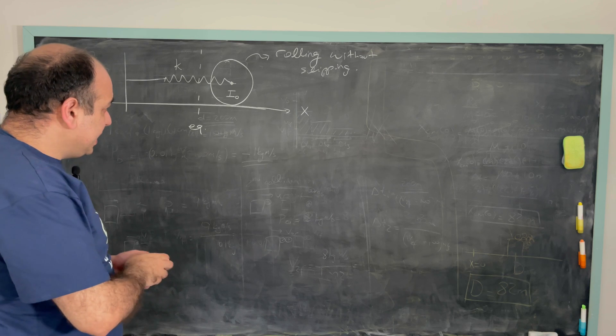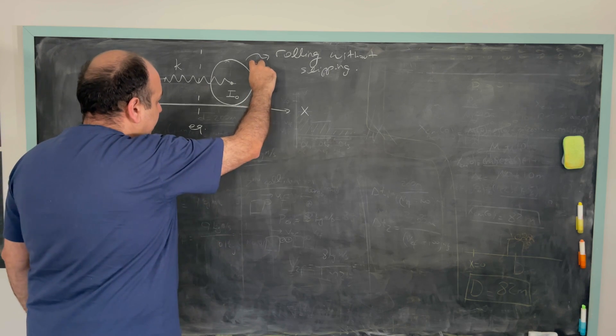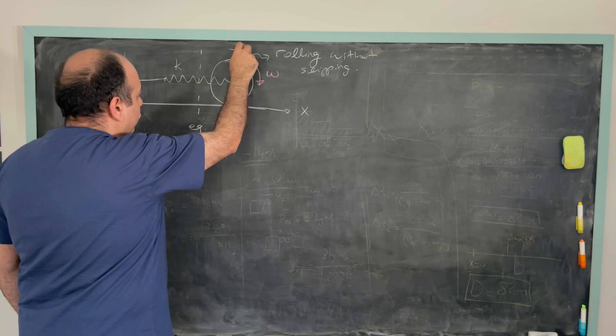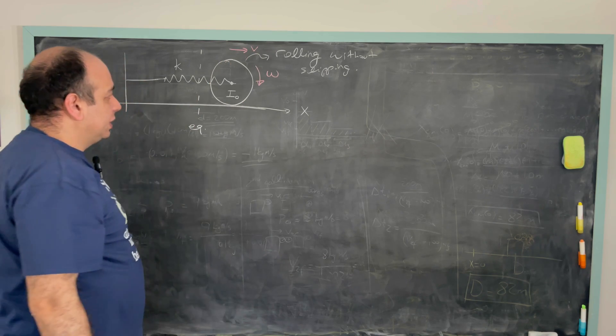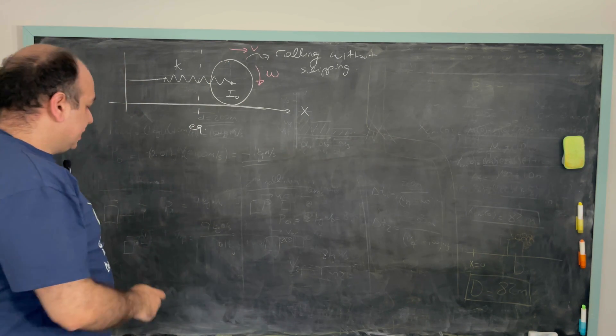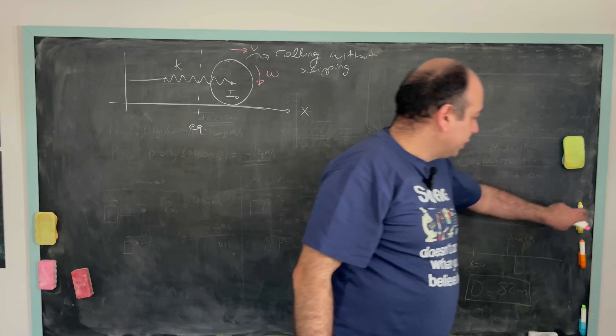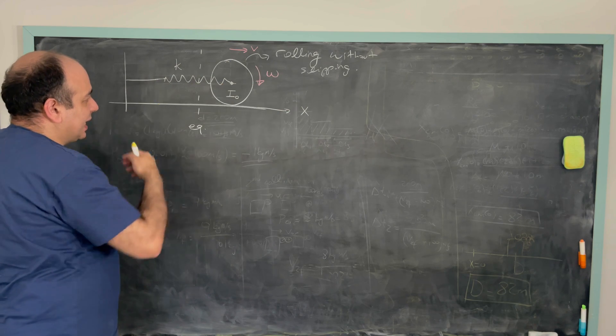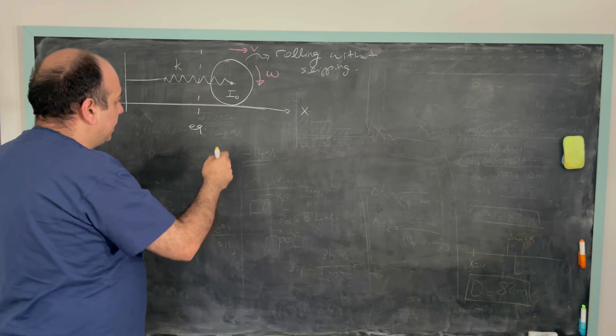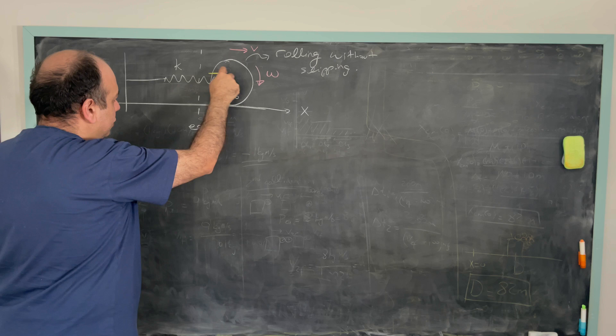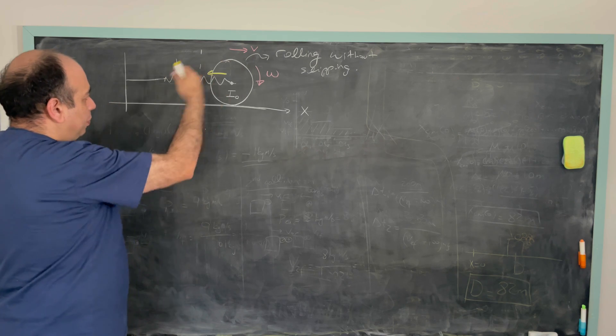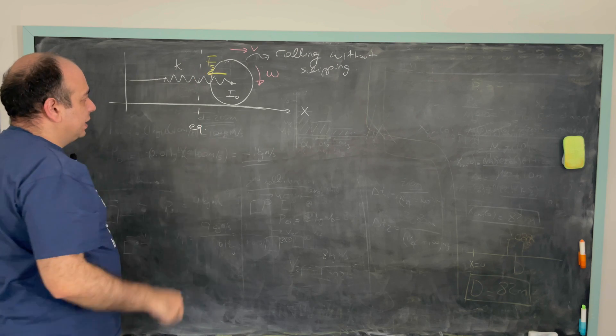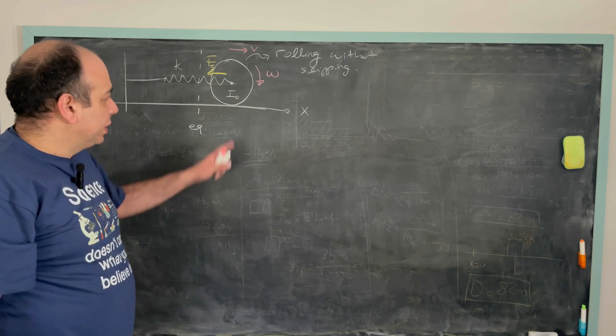So at any given time t, let's assume this object is rotating like this and it's moving to the right with some velocity v. So at this instant, we have two forces acting on the x-axis. One is the spring force which will be pulling the object back to the equilibrium. Let's call it Fs, the spring force. And there will be a friction here.